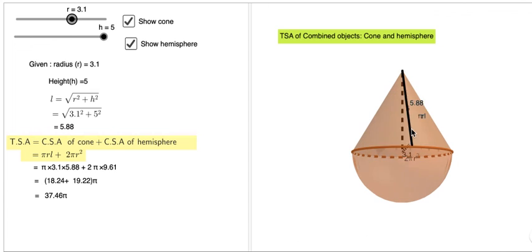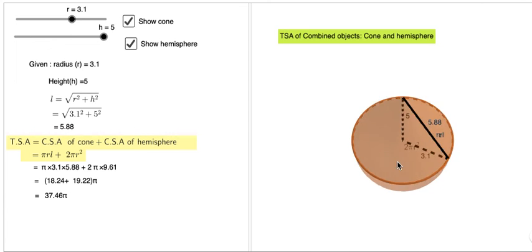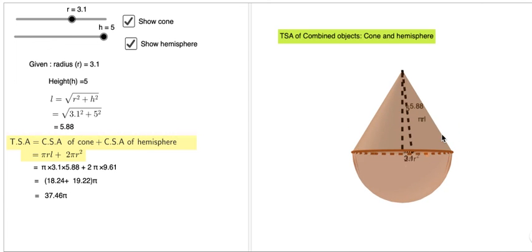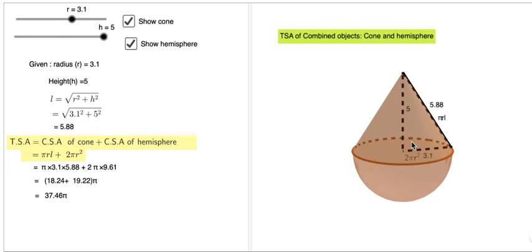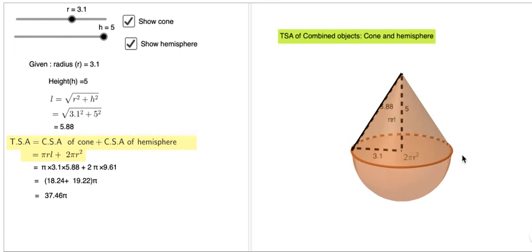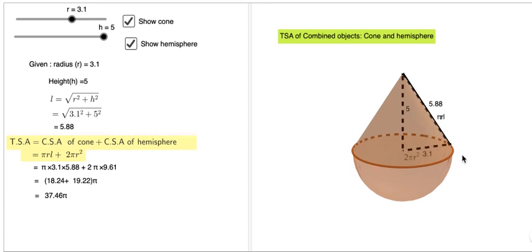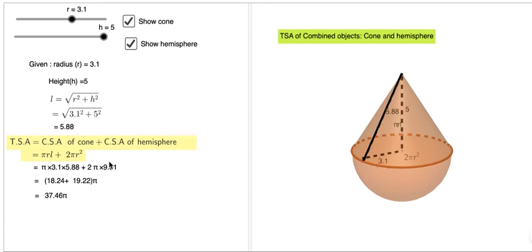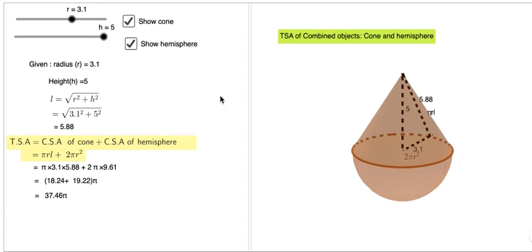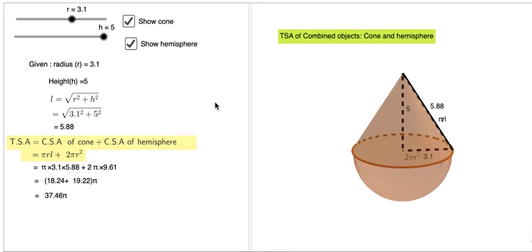This is the model to illustrate the combined object which is cone and sphere. Play around with this model and understand the concept behind the total surface area of the cone and sphere.